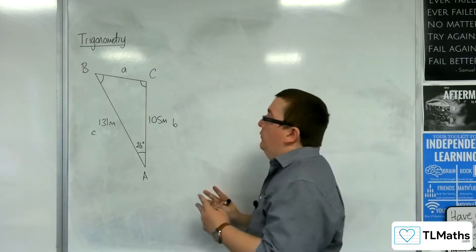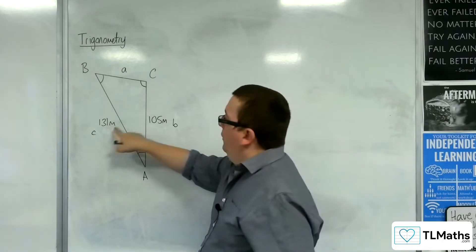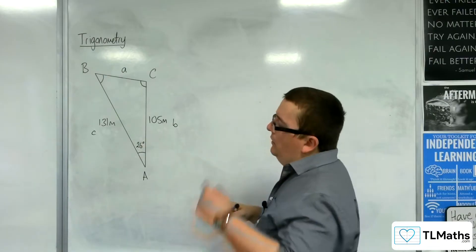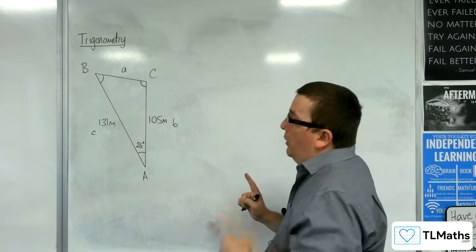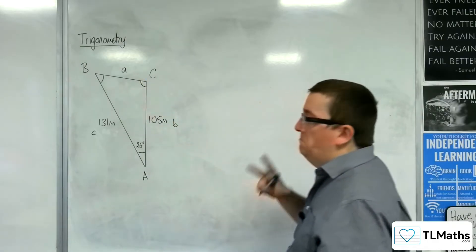First things first, I've got two sides and the interior angle. So, I can't use the sine rule, because I don't have a pair, but I can use the cosine rule to work out side a. That seems fine.